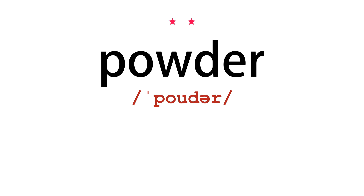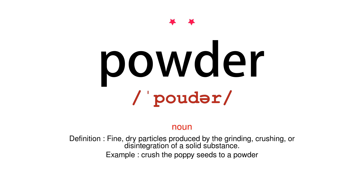Powder. Noun. Definition: fine, dry particles produced by the grinding, crushing, or disintegration of a solid substance. Example: crush the poppy seeds to a powder.